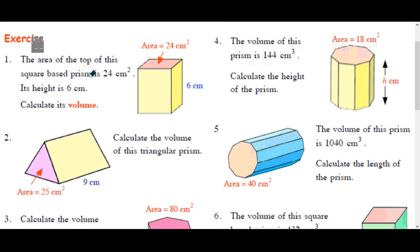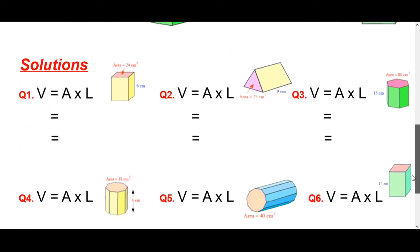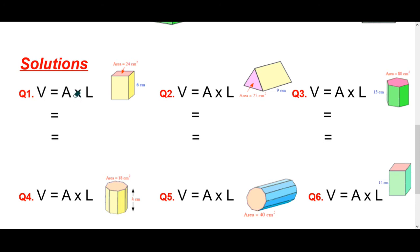So question 1, the area of the top of this square base pyramid is 24 cm squared, height 6, calculate its volume. So I'm just going to use the formula V equals A times L each time. You could use area times height if you wanted, but I'm just going to use area times length. So in this case, the area is 24, the length or the height is 6. So easy enough, 24 times 6, just use your calculator for that, and you've got 144 cm cubed. That would be the volume of this prism.